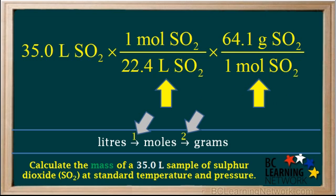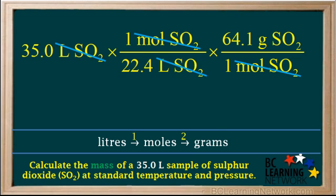We now have all the conversion factors we need for steps one and two. We can cancel out the units liters of SO2 and moles of SO2, and we're left with grams of SO2, which is the unit we wanted. So the unit for the answer will be grams of SO2.